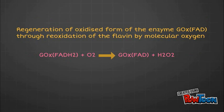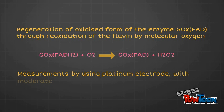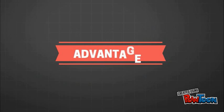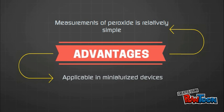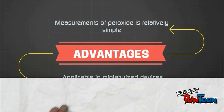The released electrons move from the anode to the cathode and a readable signal is produced. The measurements are commonly carried out on a platinum electrode at a moderate anode potential of around positive 0.6 volt. The advantage is that the measurement of peroxide is relatively simple and applicable in miniaturized devices.